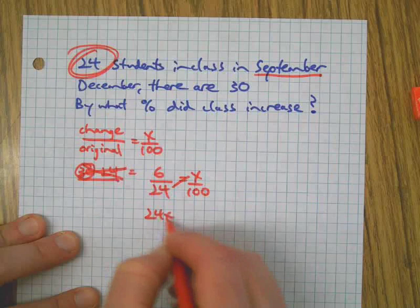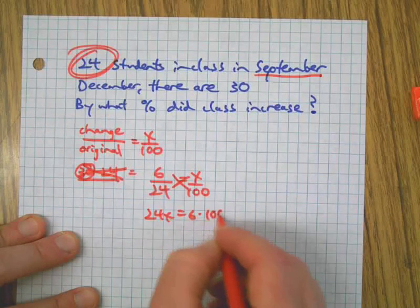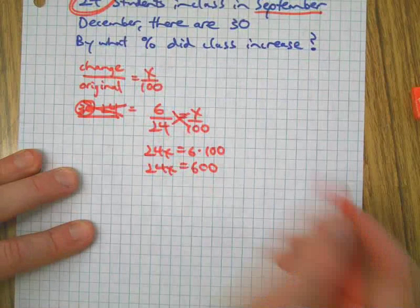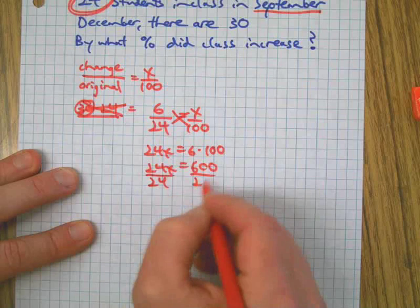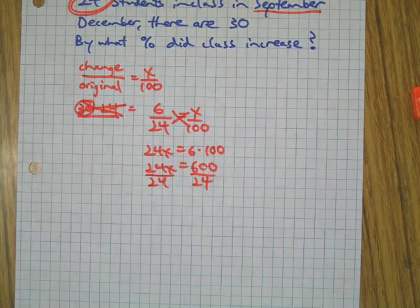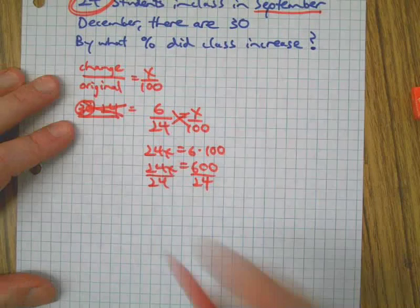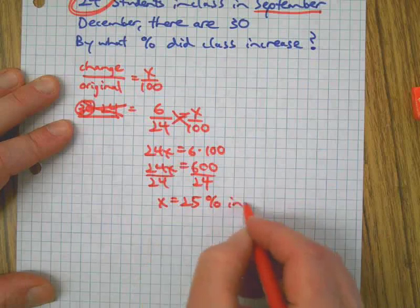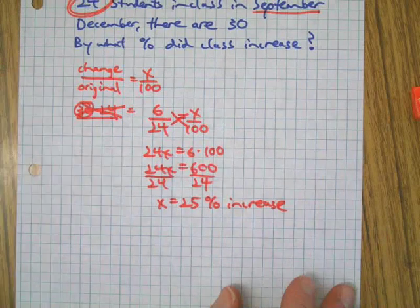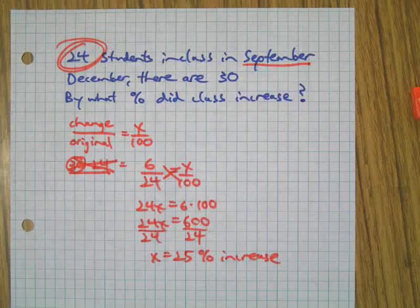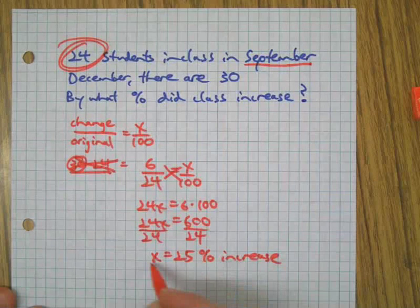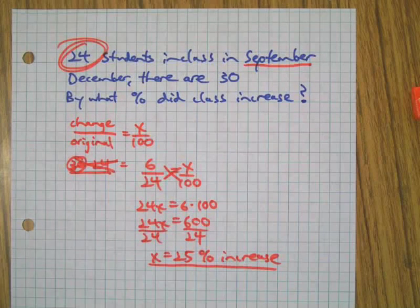We cross multiply. 24x equals 6 times 100. Let's put that together, then divide both sides by 24, the coefficient. We can see that there was a 25 percent increase in the class size. Did you get that? Nice job.